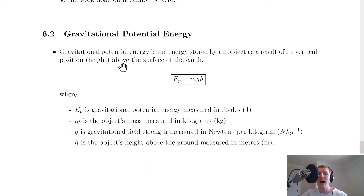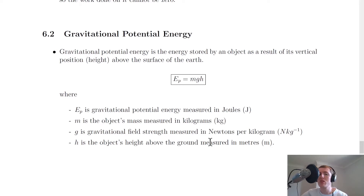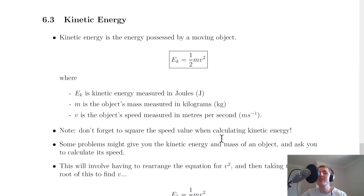Next we have gravitational potential energy, which you should know from National 5 physics. Gravitational potential energy is the energy stored by an object as a result of its vertical position or height above the surface of the Earth. The equation is Ep = mgh, where Ep is gravitational potential energy in joules, m is mass in kilograms, g is gravitational field strength in newtons per kilogram, and h is height in metres. On Earth, g most often takes the value of 9.8 N/kg.